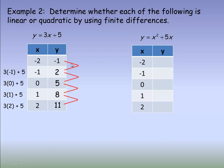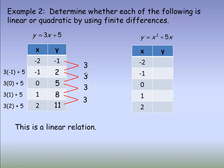Now we calculate the differences between successive y values — these are the first differences. From negative 1 to 2, that's increased by 3; 2 subtract negative 1 gives 3. Then 5 minus 2 is 3; 8 minus 5 is 3; 11 minus 8 is 3. Because the first differences are all the same — all 3 — this relation is linear. That 3 is actually the slope of the line.